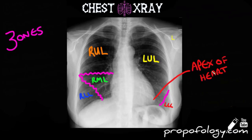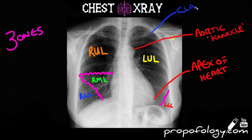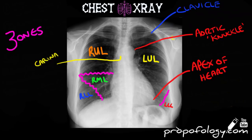I'm going to draw some other structures now. You can see the apex of the heart and the aortic knuckle, which is the arch of the aorta as it comes off the heart. You can see the clavicles at the top, and the carina, which is the bifurcation of the trachea into the right and left main bronchus. Something that sometimes catches people out is the gastric bubble — which is air in the stomach — found under the left diaphragm.